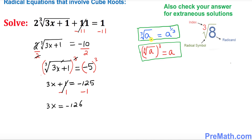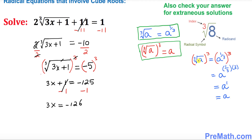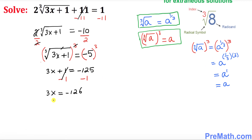Before we go further, I want you to know that the cube root of a is the same as a to the exponent 1/3. When you raise both sides to the power of 3, they undo each other and you're left with a. I've put the proof right up here for reference.